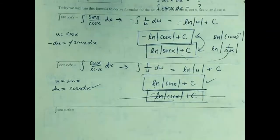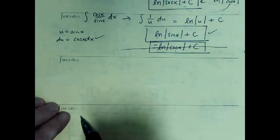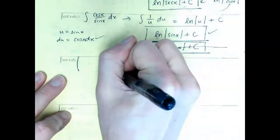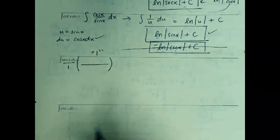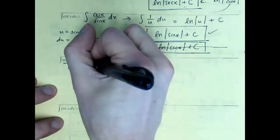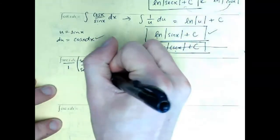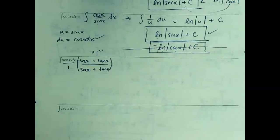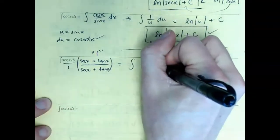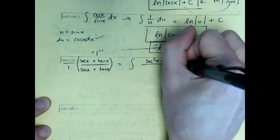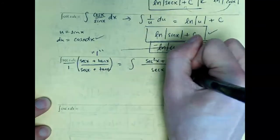For secant and cosecant, the strategy of rewriting in terms of sine and cosine won't help — 1/cos x doesn't simplify nicely. Instead, we multiply by a weird-looking form of one: multiply secant by (sec x + tan x)/(sec x + tan x). Expanding the numerator gives secant squared plus secant tan on top, and secant x plus tangent x on the bottom.